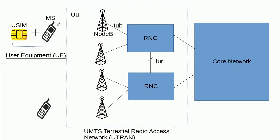A mobile network can be divided into three major parts. The first part is the user equipment, the second part is the access network, and the third part is the core network.